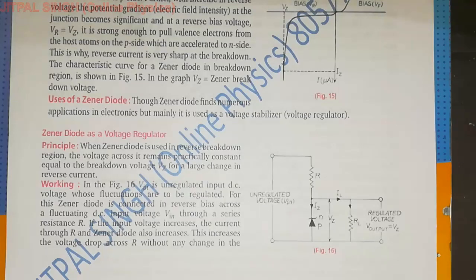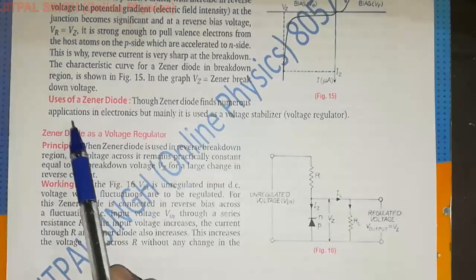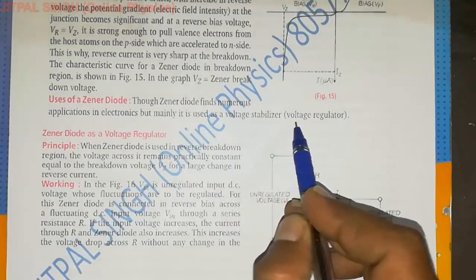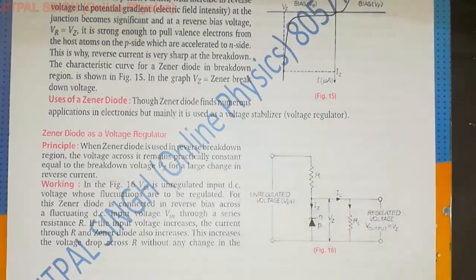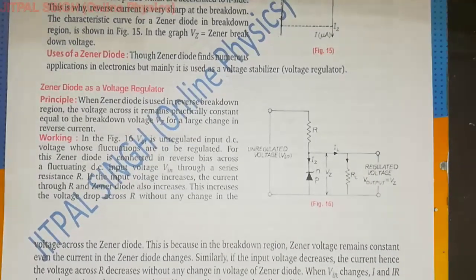Now, where is Zener diode used? Zener diode is basically used as a voltage regulator. Voltage stabilization is used. How does it work? Though Zener diode finds numerous applications in electronics, mainly it is used as a voltage stabilizer. Voltage regulator is used to maintain the voltage.